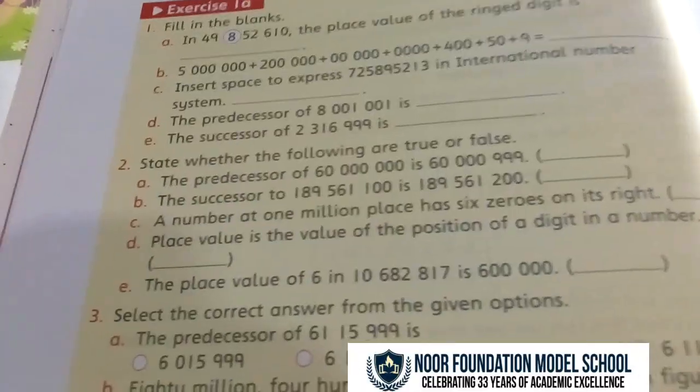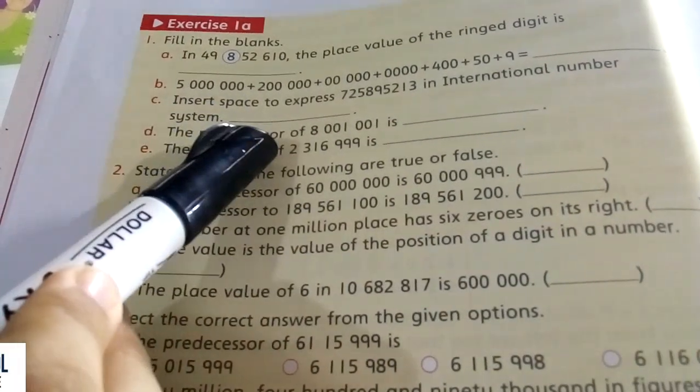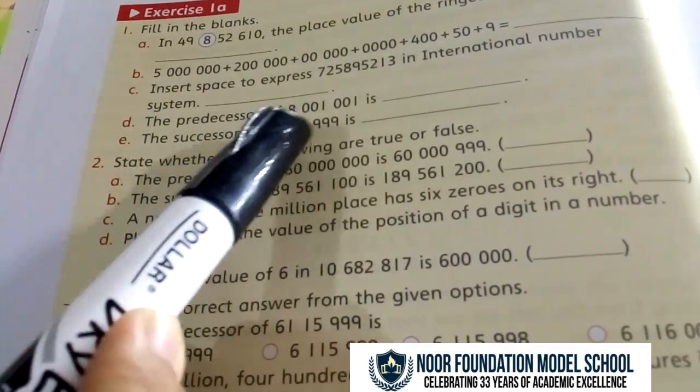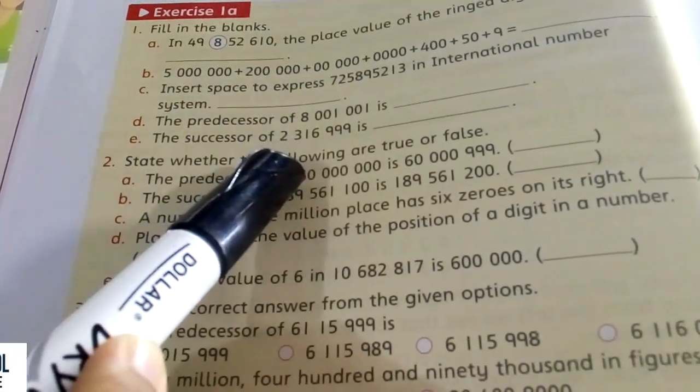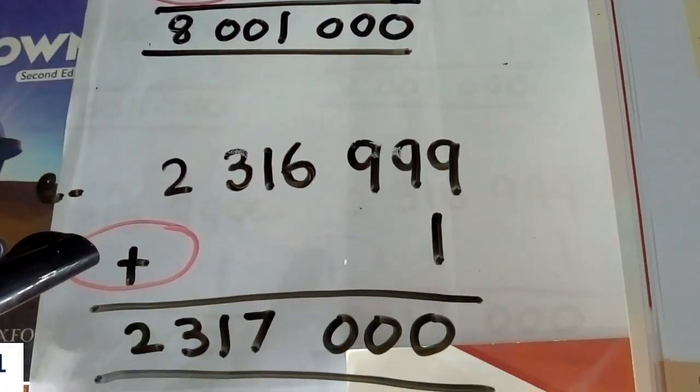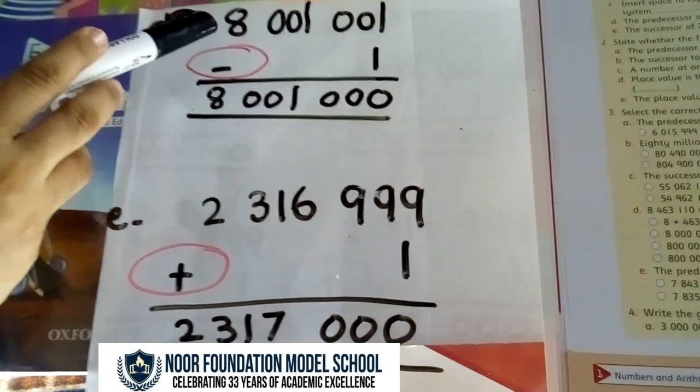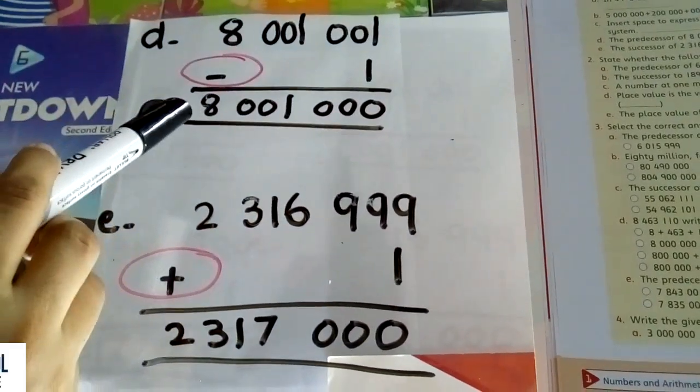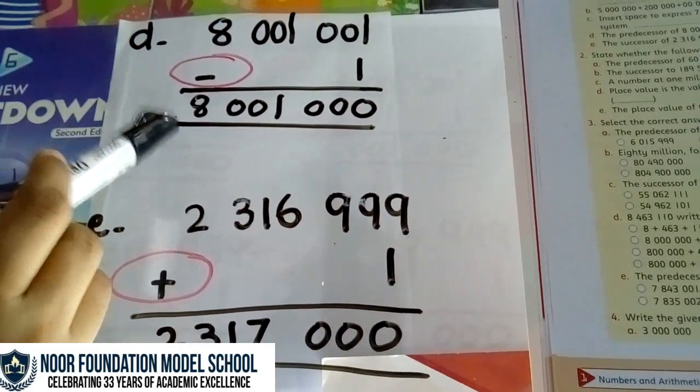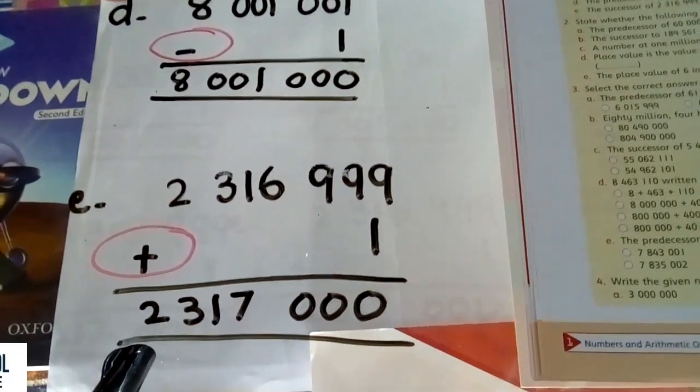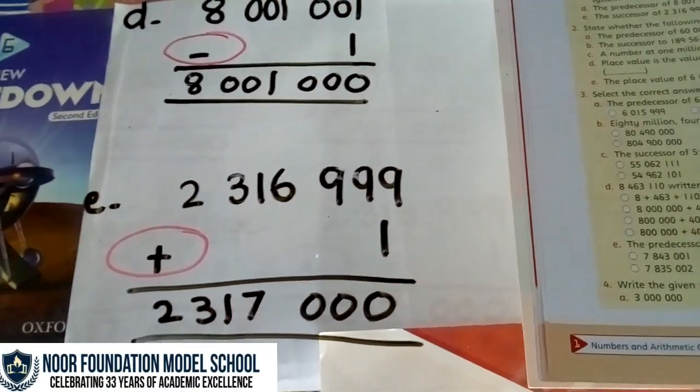Part D: Now, the predecessor of this number is—and Part E: the successor of this number is. You know the predecessor and successor. In predecessor, you have to minus 1 from the given number, and in successor, you have to add 1. So, write the number and then subtract 1 from it, you will get the predecessor or previous number. And then, write the number and add 1, and you will get the successor or the number that comes after that number.